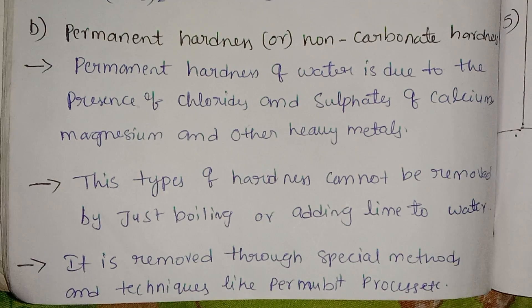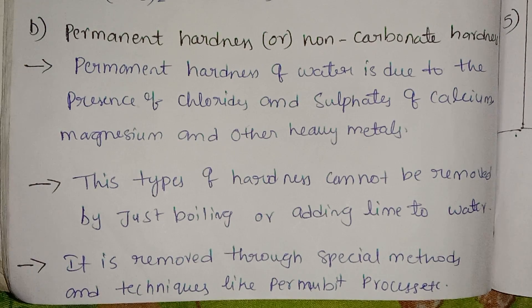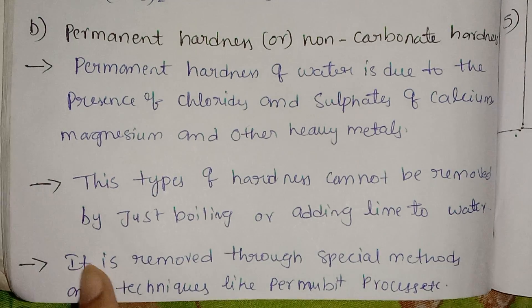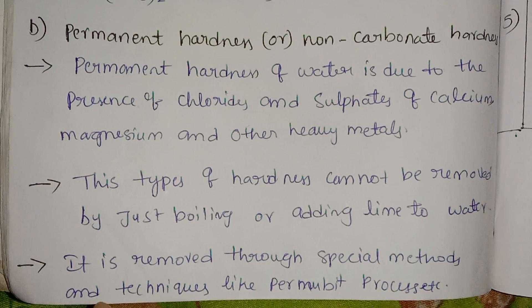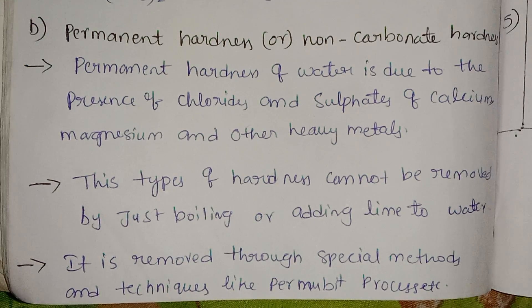To remove permanent hardness, special methods and techniques are used, like the Permutit process. We will explain these methods in the next class.